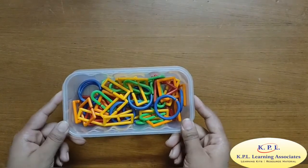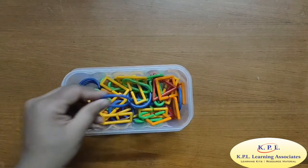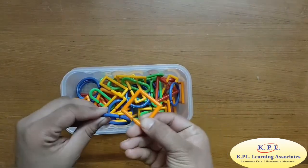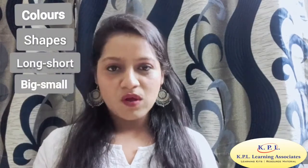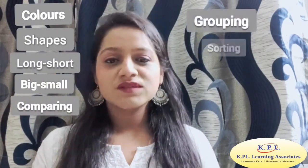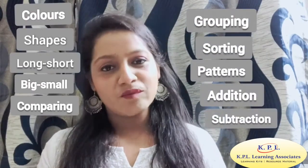The box has 50 clips in 5 basic shapes and 5 basic colors. Each clip has a link with which we can join the clips. This kit will help understand many mathematical concepts in a playway method like identifying colors, basic shapes, pre-numeracy concepts like long, short, big, small, comparing, grouping, sorting, making different types of patterns, addition, subtraction and many more.